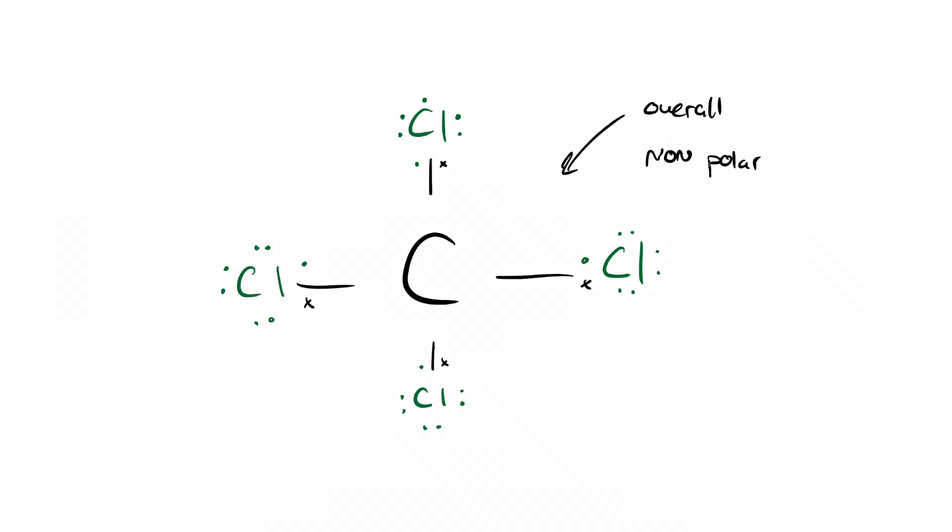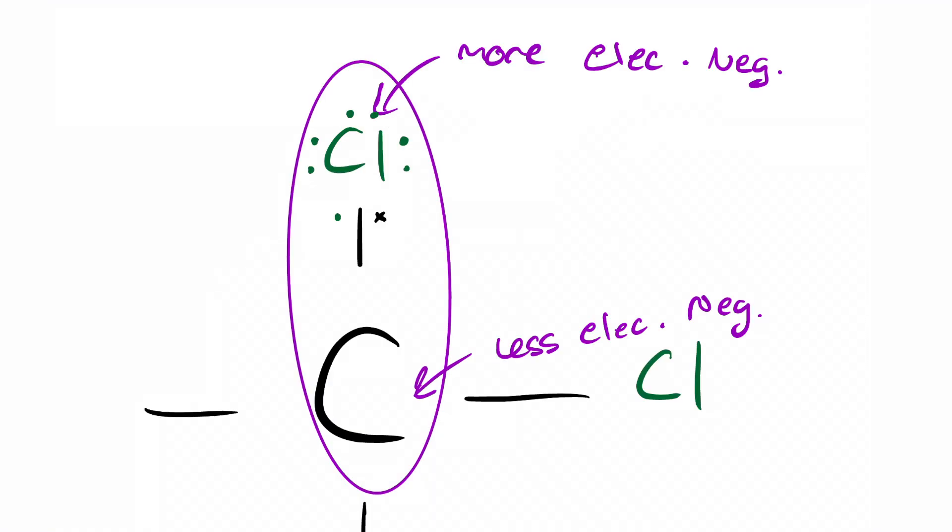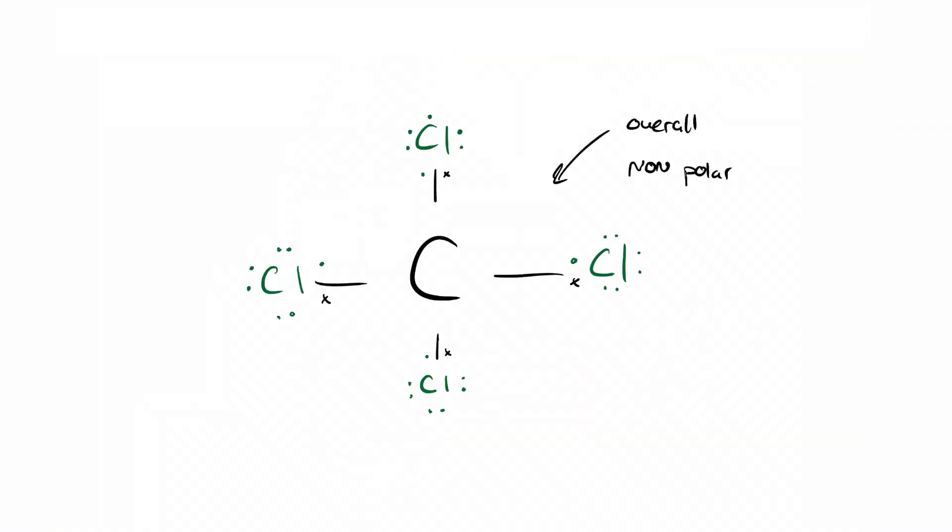So on the whole, this molecule is actually not polar. The four bonds have canceled it out. So carbon-to-chlorine is a polar bond, but because of the structure of this molecule, you can see it's not polar.